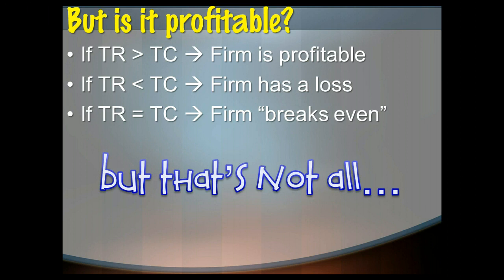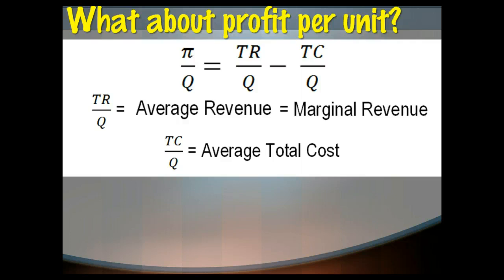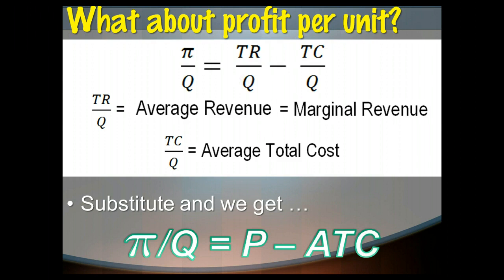But there's more to it than just saying that total revenue equals total cost is breaking even, or that if it's greater or less than total cost, we have profit or loss. We could go further. We could say that the profit per unit is equal to our total revenue divided by quantity minus total cost divided by quantity. And we know that total revenue divided by quantity is average revenue. It's the revenue per unit. And we know that the revenue per unit is our marginal revenue. And we know that's equal to price. And we know that total cost divided by output is our average total cost. So we could actually rewrite the profit equation and say that profit per unit is equal to price minus average total cost.